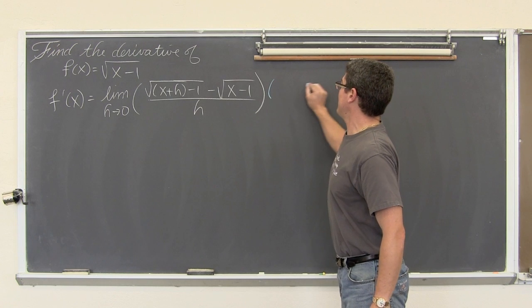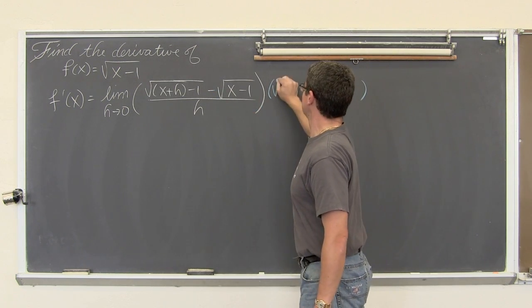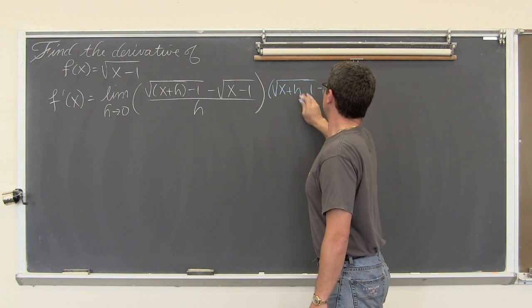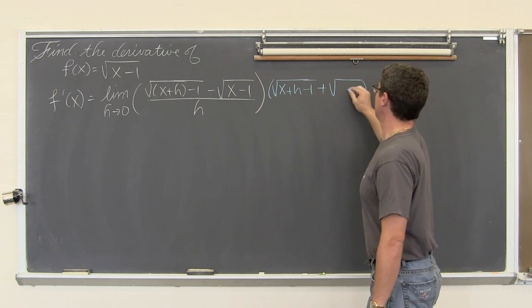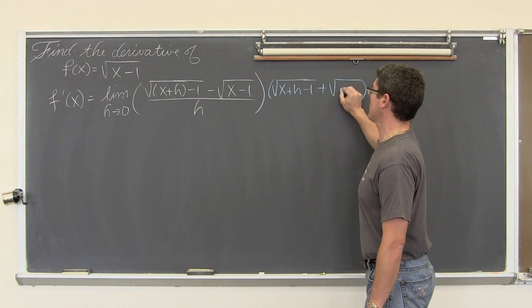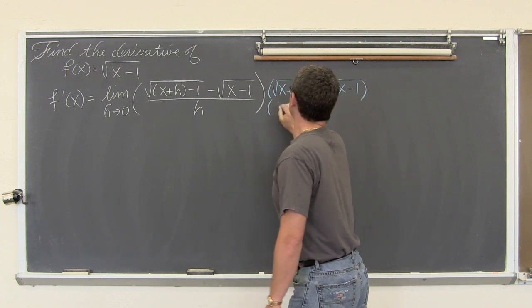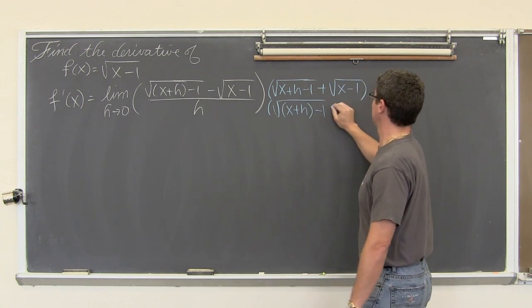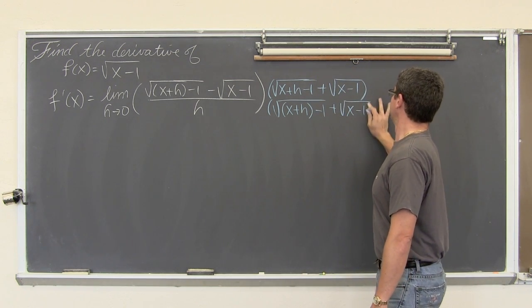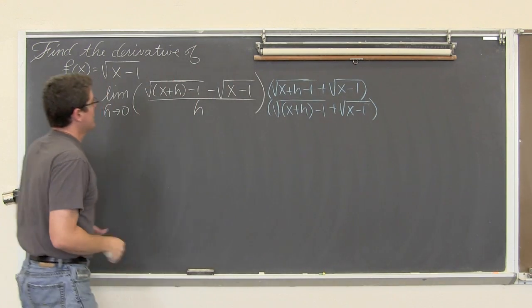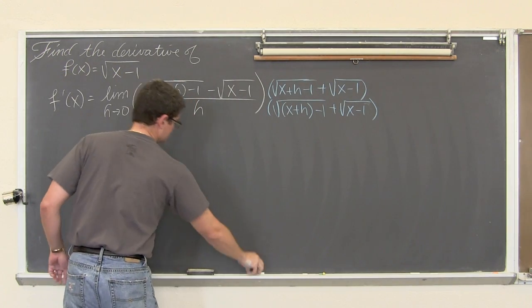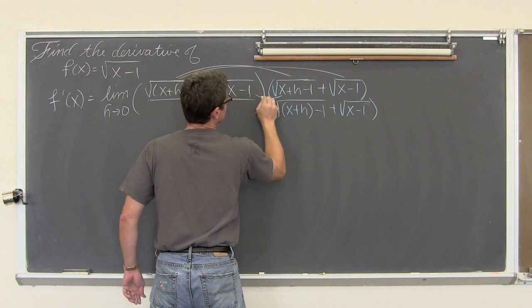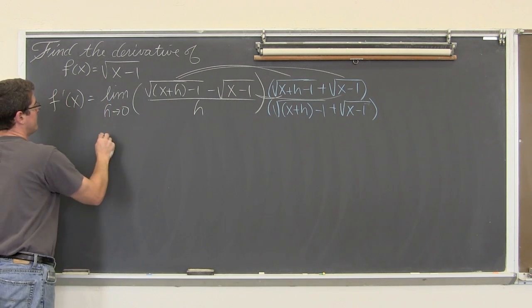There is a lot of algebra to get the numerator rationalized and hopefully get to some point where I can get rid of that h in the denominator. So we are going to multiply top and bottom by the conjugate — just change the middle sign of the binomial. Multiply top and bottom by the square root of x plus h minus 1 plus the square root of x minus 1. Doing this very, very slowly and carefully to make sure there are no mistakes.